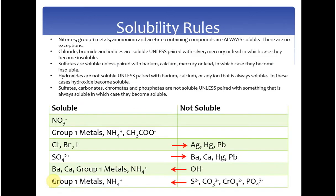In order to identify the precipitate in your reaction, we need to talk about solubility rules. I've got them here two ways — in picture form and in text or flashcard form. Nitrates, group 1 metals, ammonium, and acetate compounds are always soluble — period, no exceptions. Chlorides, bromides, and iodides are soluble unless they're paired with silver, mercury, or lead, in which case they become insoluble. So silver chloride, silver bromide, and silver iodide are insoluble.